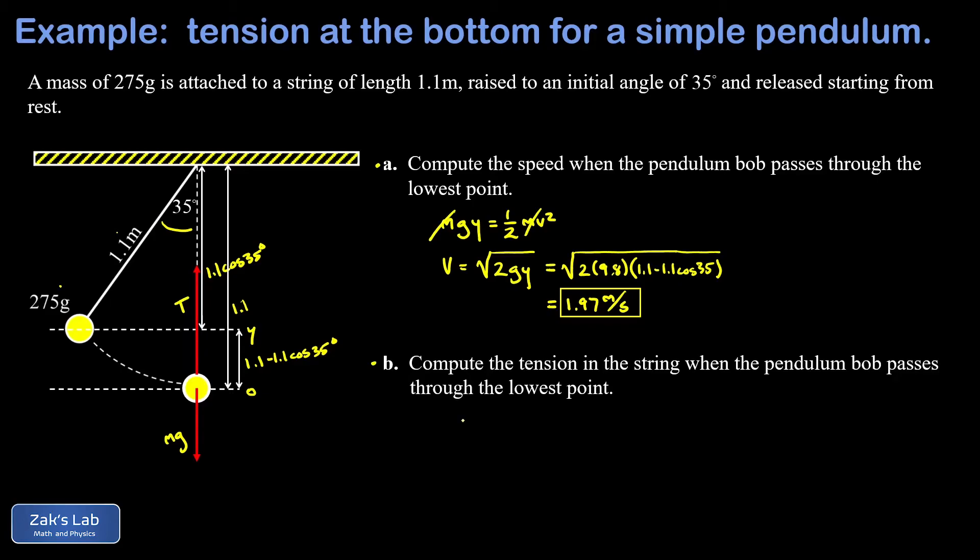So we apply Newton's second law to the pendulum bob at this moment. That's F net equals ma, and we're going to use a coordinate system where upward is positive. So T counts as positive, mg counts as negative. There's my net force, that's equal to mass times acceleration. Well, it's in circular motion here, so the acceleration is v squared over r. And the radius of curvature r is equal to the length of the string here.